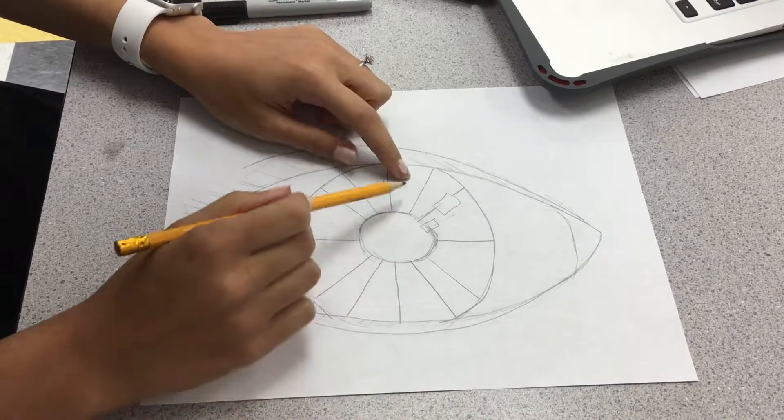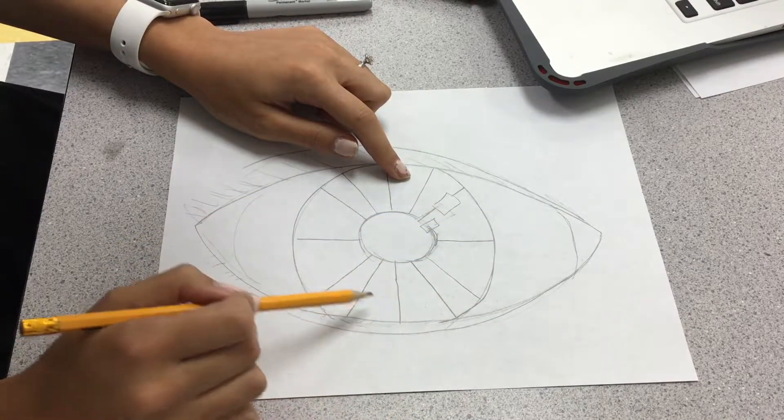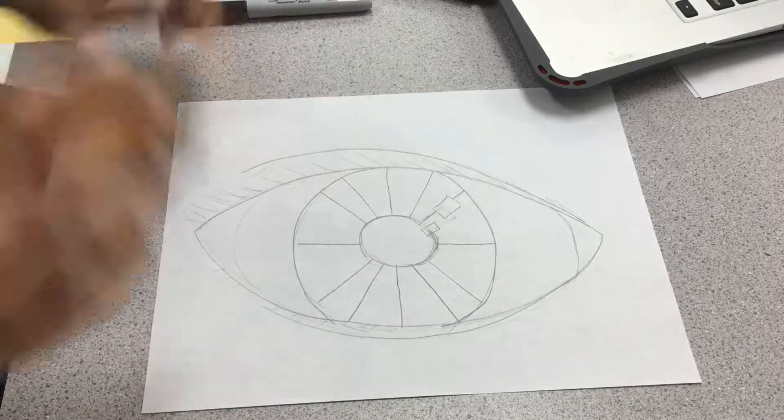And let's count how many pieces do I have. One, two, three, four, five, six, seven, eight, nine, ten, eleven, twelve. So there we go.